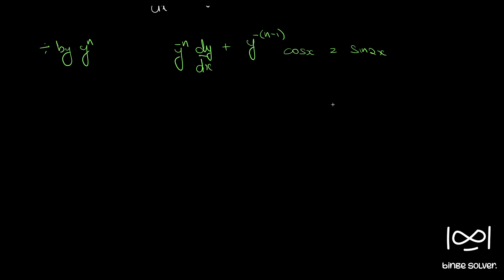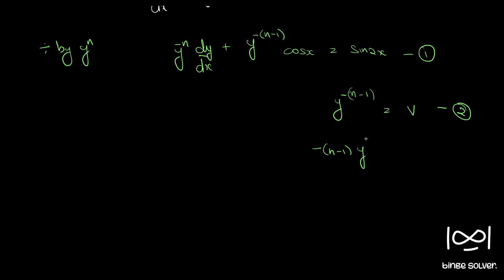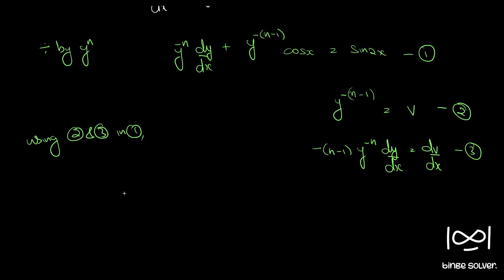Now if you put y raised to minus n equal to v, and differentiate both sides of equation 2, we get minus n minus 1 into minus n. Then using equations 2 and 3 in equation 1, we have minus 1 by (n minus 1) times dv/dx, where y raised to minus n minus 1 equals v.